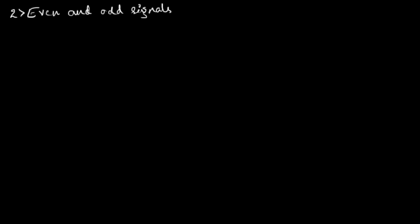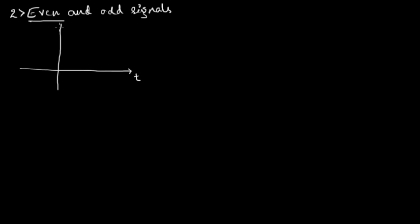In this video we'll see the second classification of signals, which is even and odd signals. First we'll consider even signals. To understand this better, let us draw one diagram where the x-axis represents time t and the y-axis represents signal x of t, and this is how our signal looks.